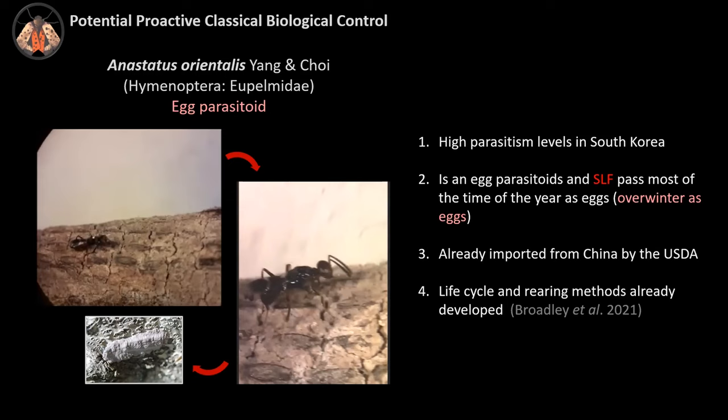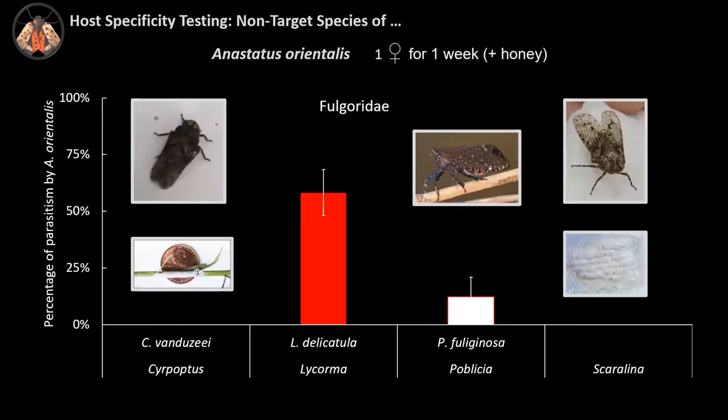We started directly to work on the western host range and behavior of Anastatus orientalis in California. The results of exposing this parasitoid to eggs of native Fulgorids — we can see in this figure in red the percentage of parasitism of Anastatus orientalis on our control, spotted lanternfly Lycorma delicatula, and in white the parasitism rates of non-target host species. We can see that the parasitoid can only use Poblicia as a host within the Fulgoridae group. For these experiments, we always used one female for one week plus honey, and the female was mated.